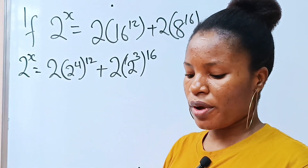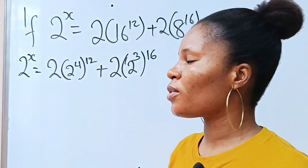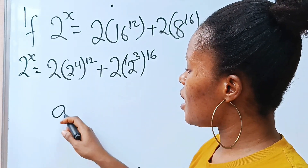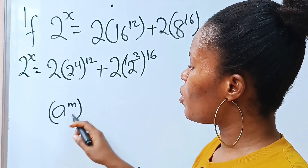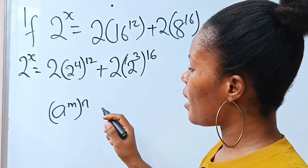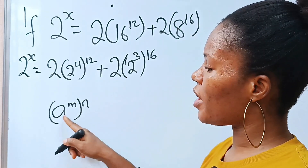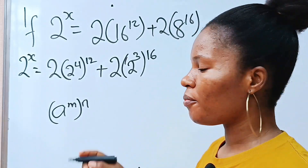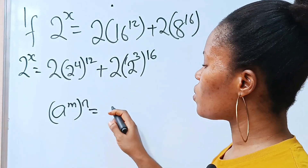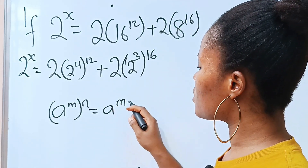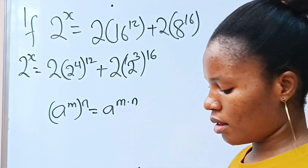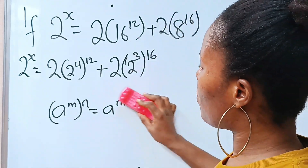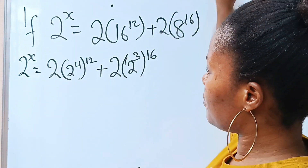Now I want us to recall the law of exponents that states that a raised to the power of m, raised to the power of n, is equal to a to the power of m multiplied by n. We are going to apply that here.